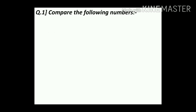Compare the following numbers. In this question, children, we have to compare the numbers. First one: 8 upon 7 comma 0. Here children, the two numbers are given — which is the greater one and which is the smaller one? Here 8 upon 7 is greater than 0, so the answer will be 8 upon 7 greater than 0.